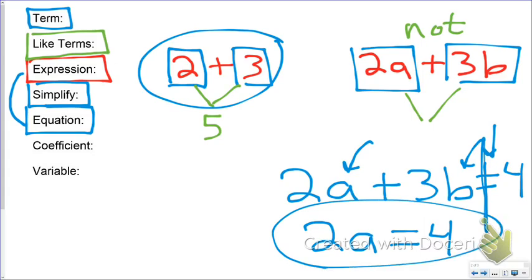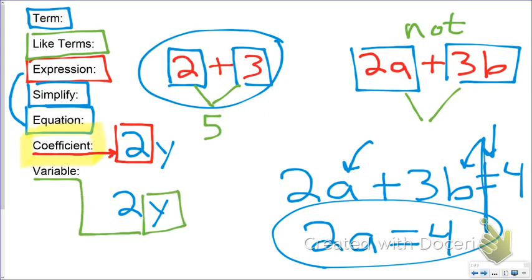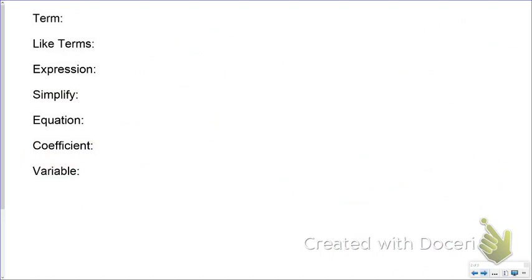Coefficients. A coefficient is a number that's connected to a variable. In this term, the coefficient is 2. In the term 2y, the variable is y. The variable is the unknown. The coefficient is the number attached to the variable. If I gave you a term A, there is a coefficient here that we don't normally write. That coefficient would be 1.